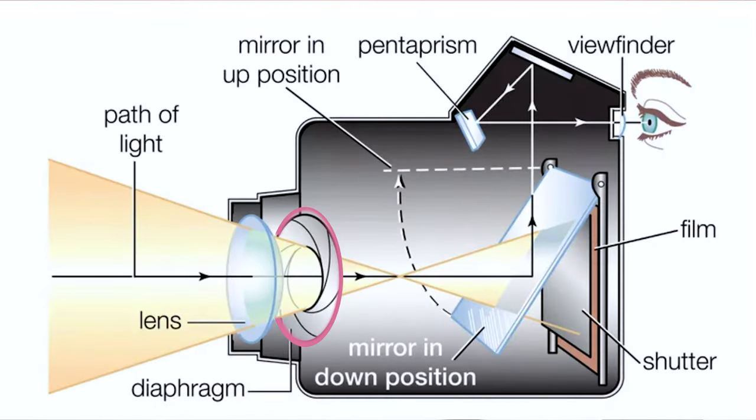Let me start by explaining what aperture is. It's one of the three main settings on your camera, alongside ISO and shutter speed. Think of it as that tiny hole in the middle of your lens that lets light come in.